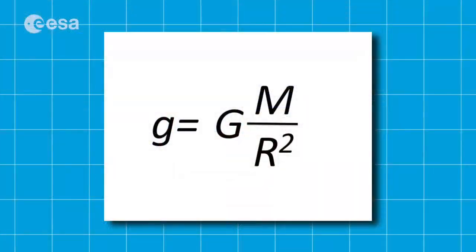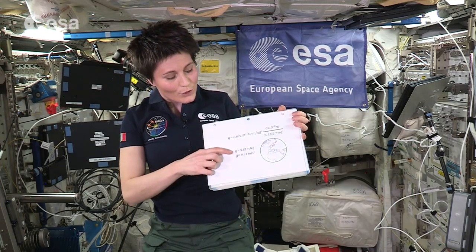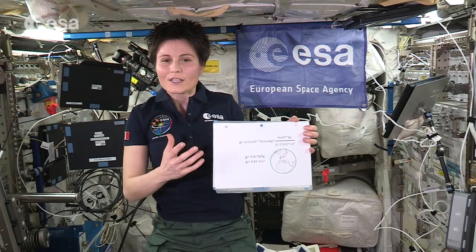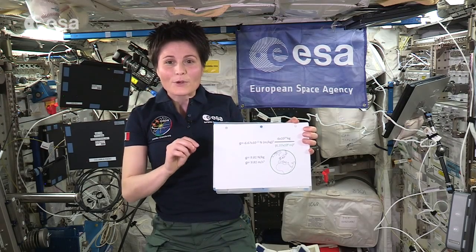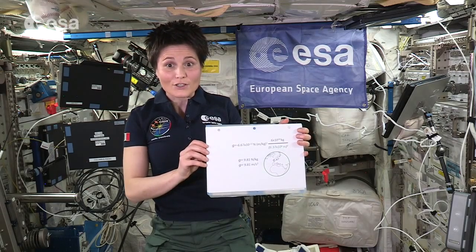And big R is the average radius of the Earth in meters, that is about 6,370,000 meters. Introducing numbers, we determine small g as being equal to 9.81, and that can be expressed in newtons per kilogram — it basically represents the amount of weight per kilogram of an object at that particular point in the gravitational field.